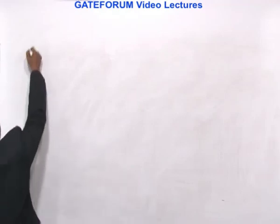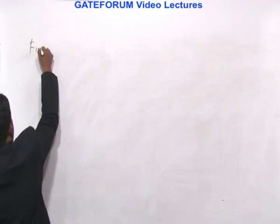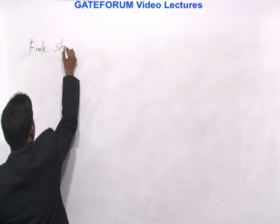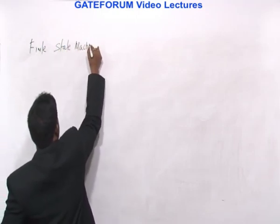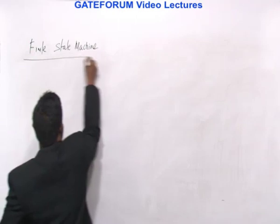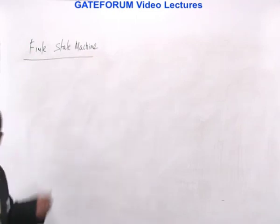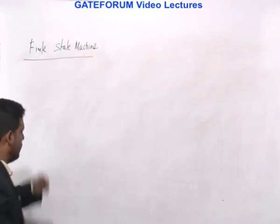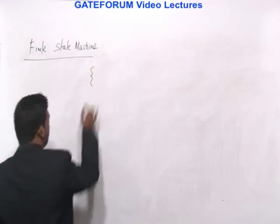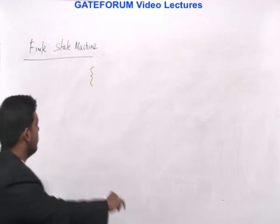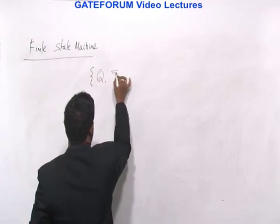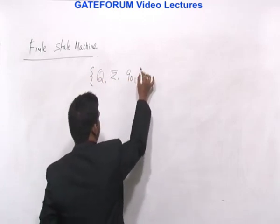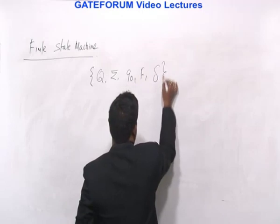Now the mathematical definition of a finite state machine. We start with definition, as everyone does. So a finite state machine is a tuple: Q, sigma, Q0, F, delta. It is a five-tuple.